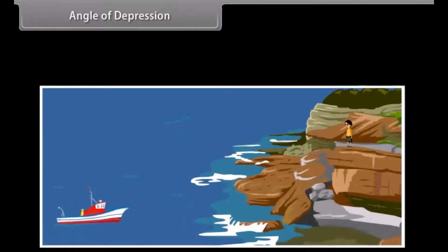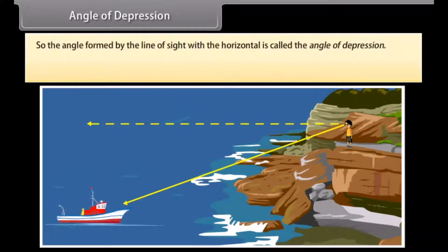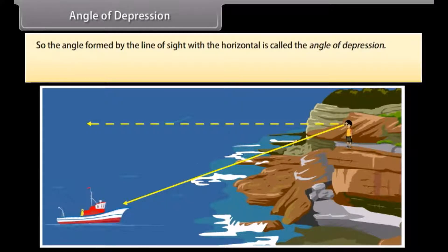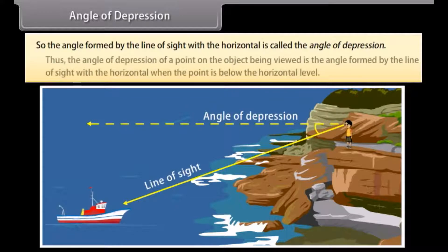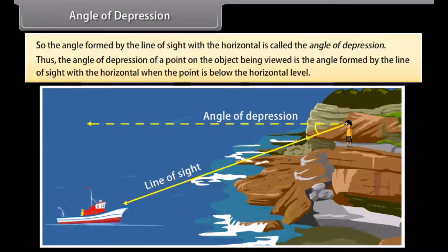Now consider the situation when a boy is standing at the cliff and is looking down at the boat. Here the line of sight is below the horizontal level. So, the angle formed by the line of sight with the horizontal is called the angle of depression. Thus, the angle of depression of a point on the object being viewed is the angle formed by the line of sight with the horizontal when the point is below the horizontal level.